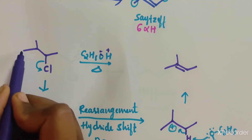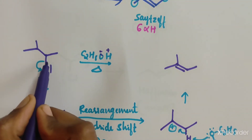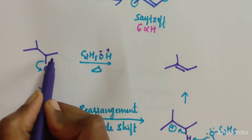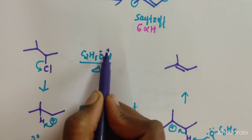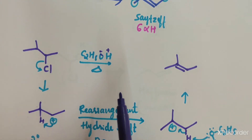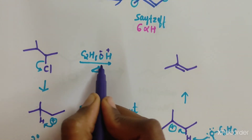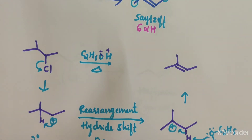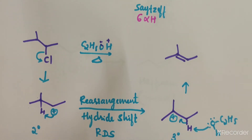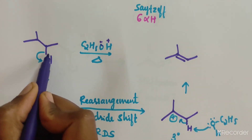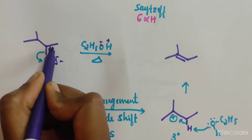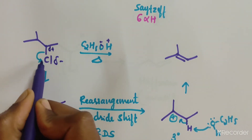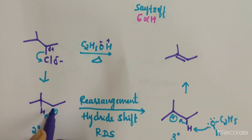The next example: the substrate is CH3–CHCl–CH3 (2-chloropropane) under the same conditions — C2H5OH with heating. In this E1 reaction, a positive charge is created and a carbocation is generated.